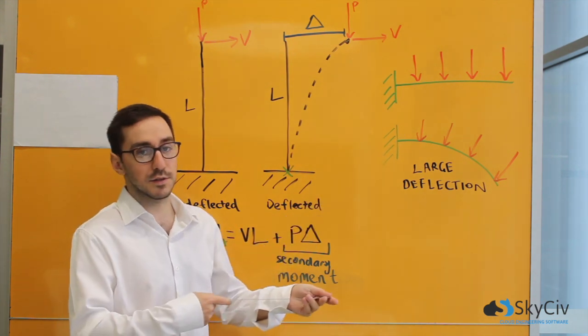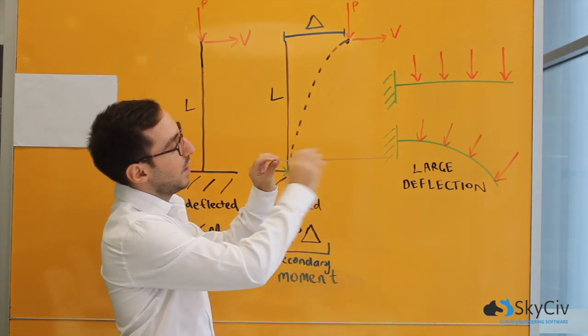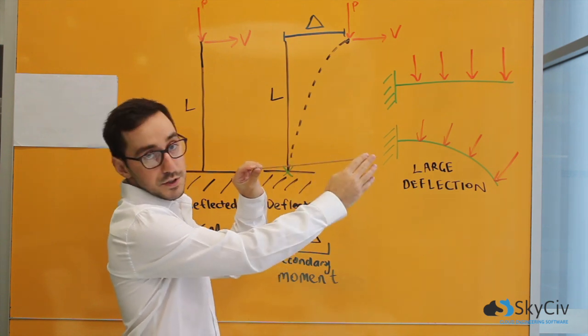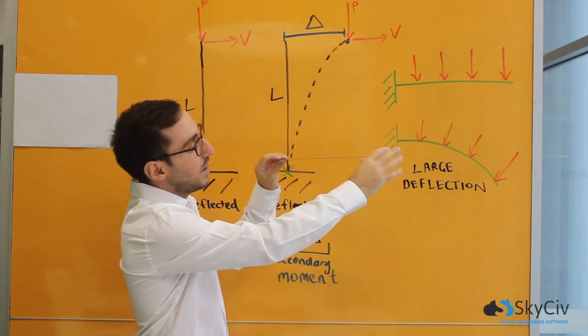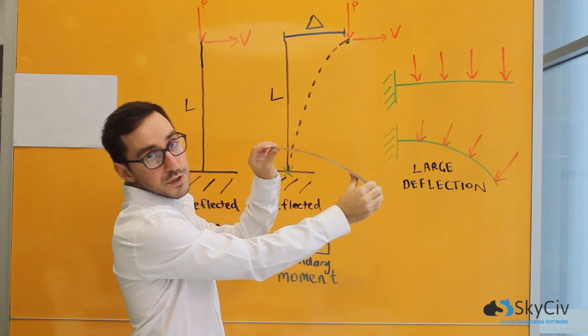In a linear static analysis, it will apply the loads to the undeformed position of the beam as if it hasn't moved, and then at the end it will calculate the deformed position.